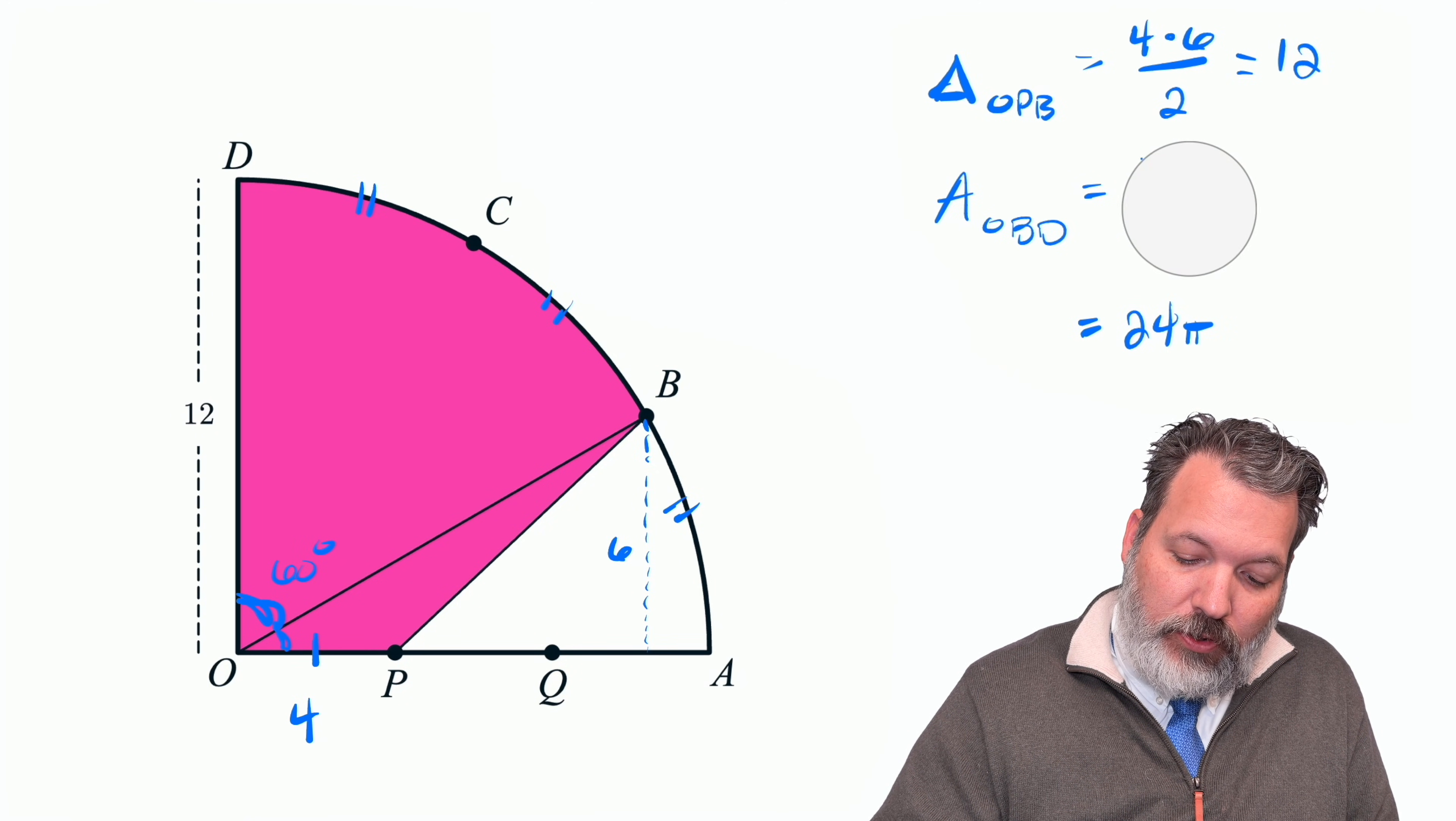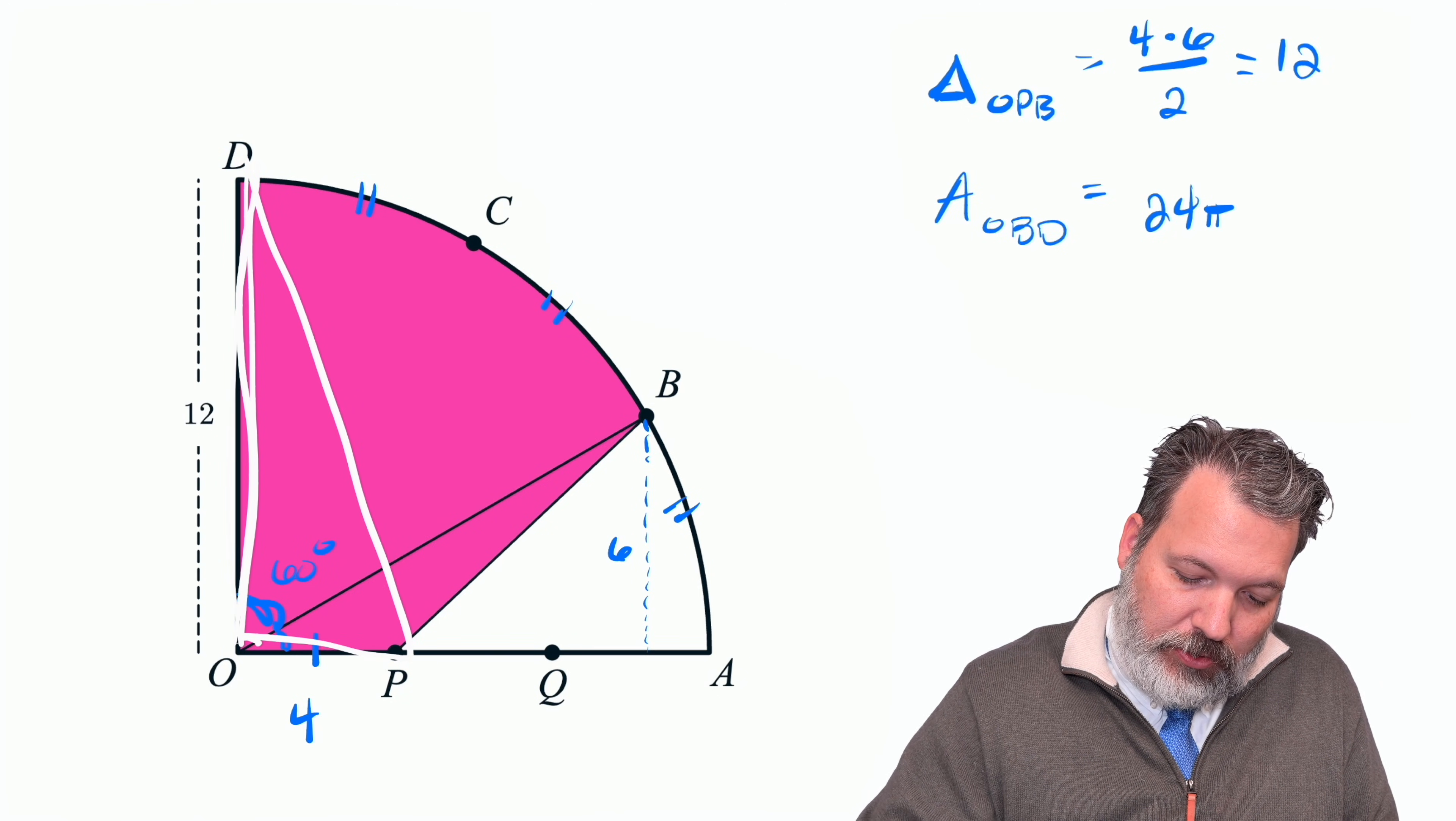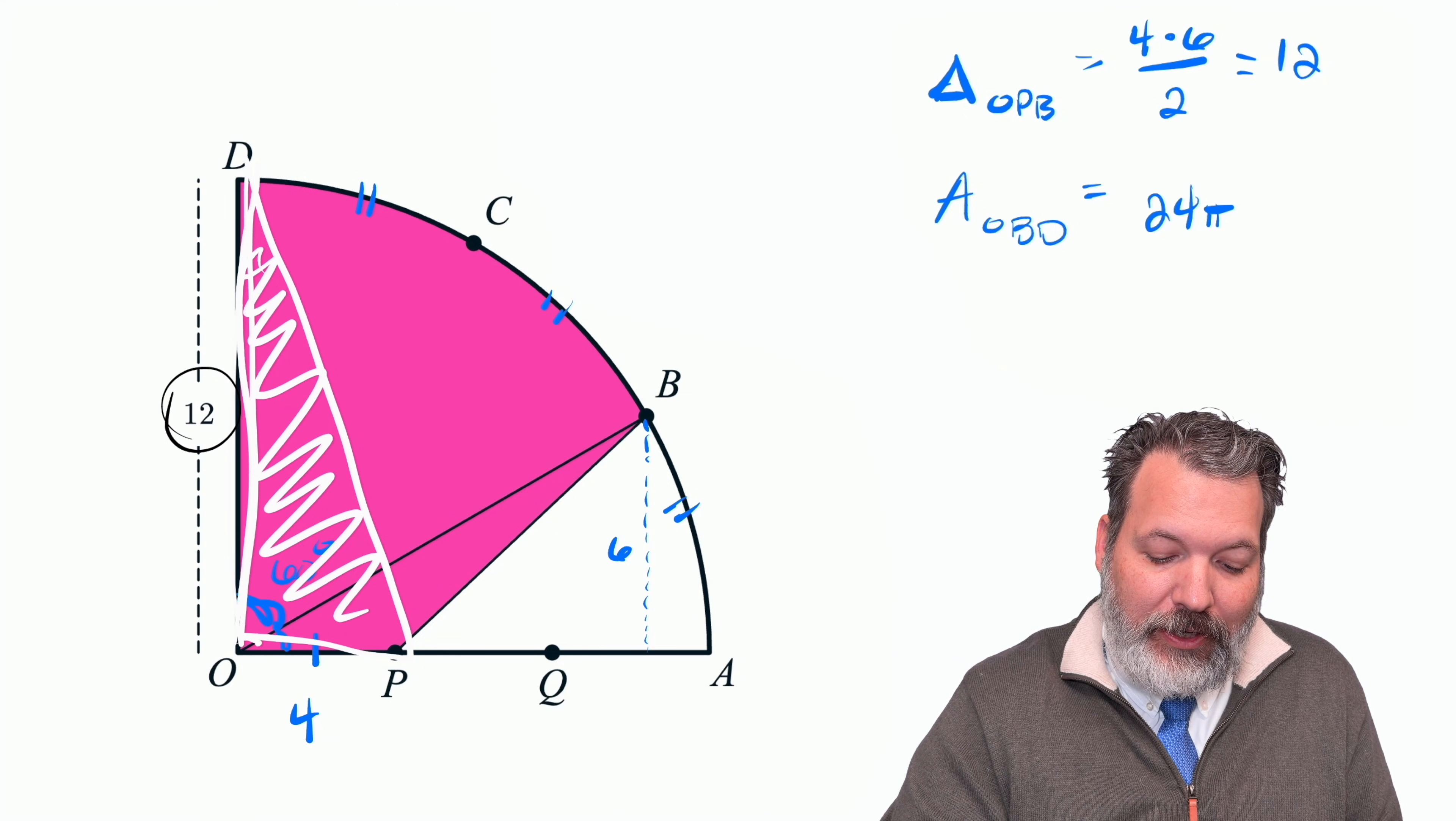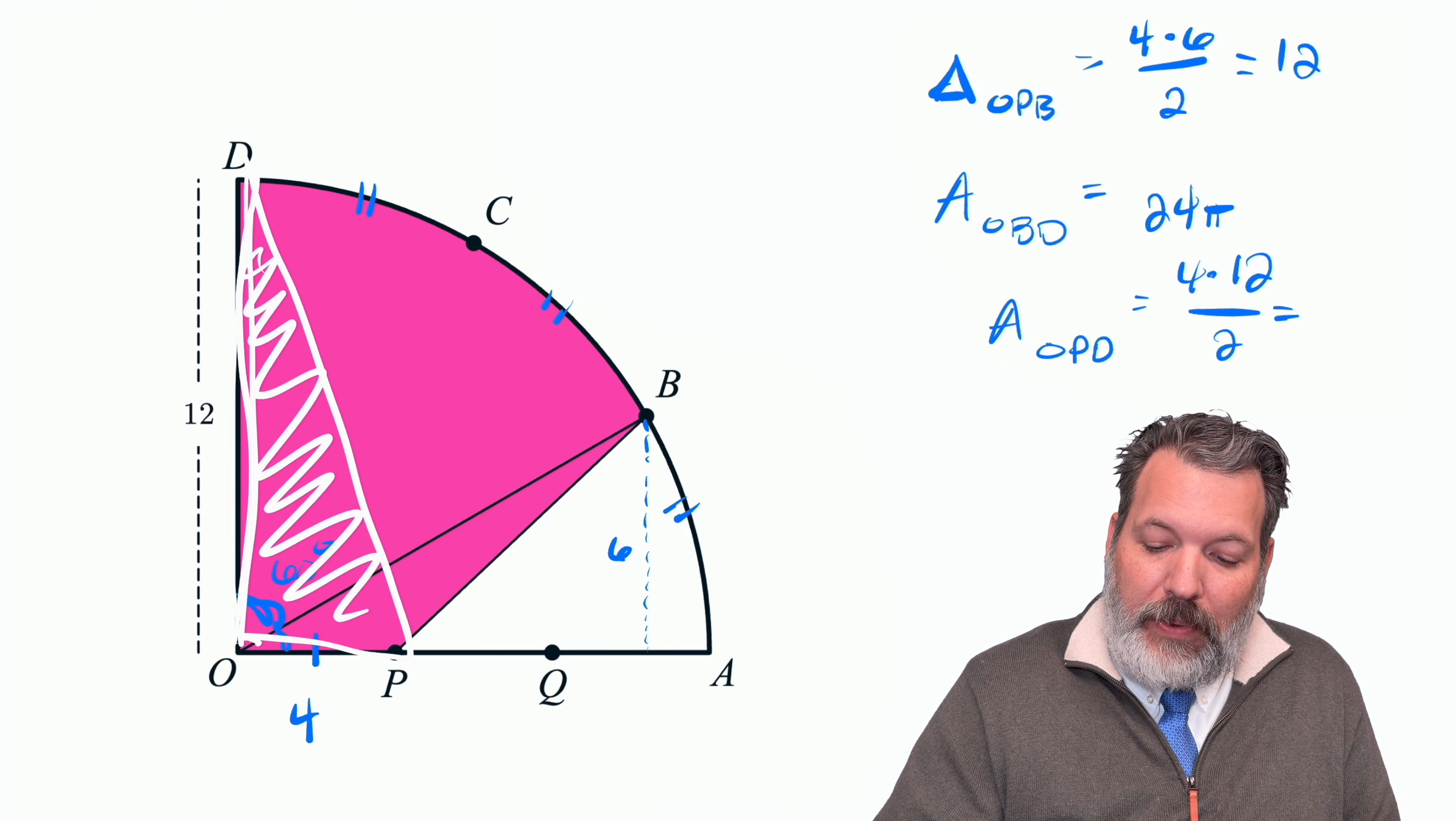So, if you're keeping track, we have two of the three pieces we need. The only other thing we need would be that area of triangle OPD that we wanted to subtract away. You'll notice for that particular triangle, which I'm going to try and do in white here, we actually already know the base is 4. That was the same as the base of OPB. And for that matter, we already know the height because it's just the same as the radius of the quarter circle. So, that makes the area of OPD the base of 4 times a height of 12 divided by 2 makes 24.